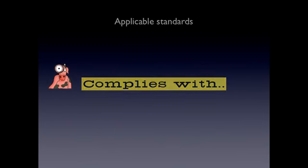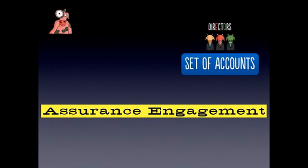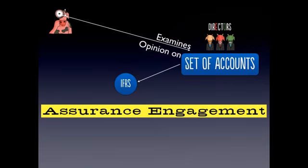Here's another party, some directors, they are preparing something, a set of accounts, and here's another person, the auditor, who is examining that set of accounts. In an audit they're going to give opinion on that set of accounts, but if they're going to give an opinion on it then they must have something to compare it against, some certain standards, and those standards are normally IFRS.